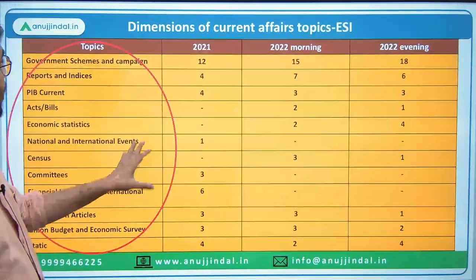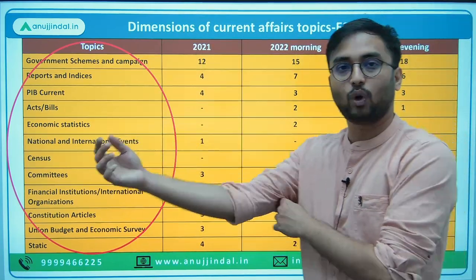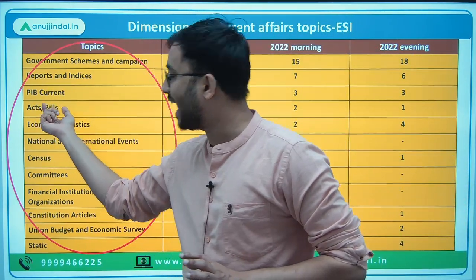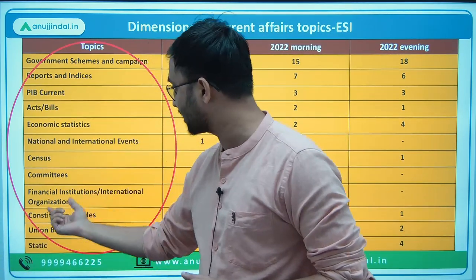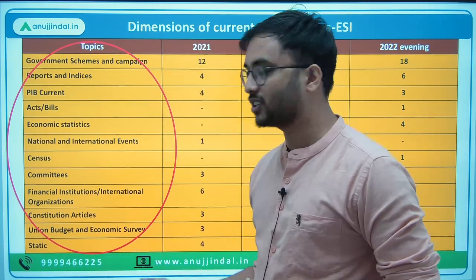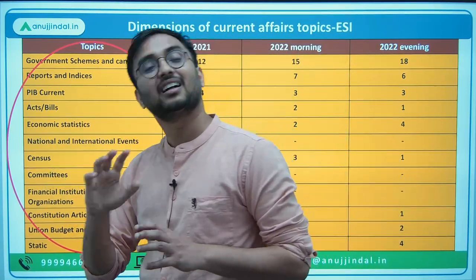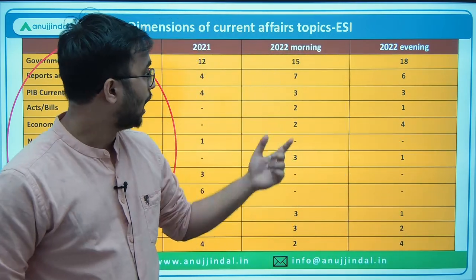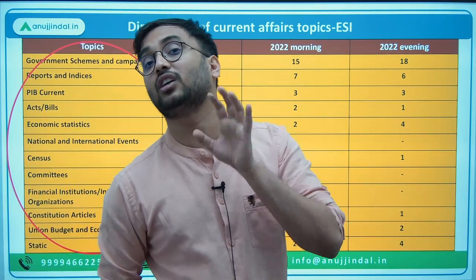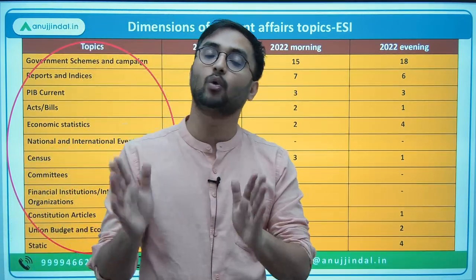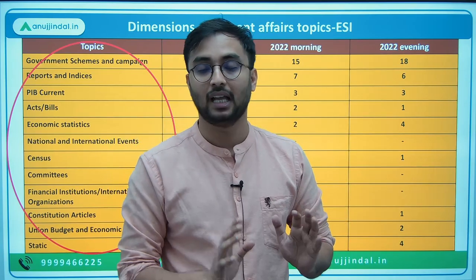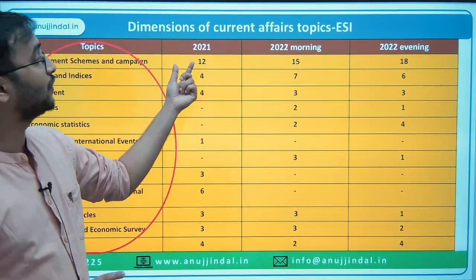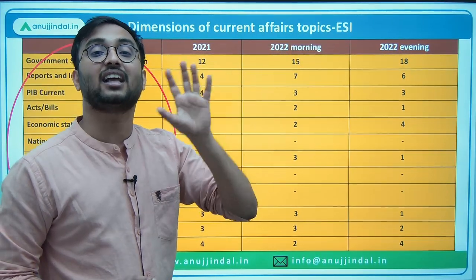Now the dimensions of current affairs topics asked in ESI: government schemes, reports and indices, PIB current news, acts and bills, important government reports such as census, committee reports, union budget, economic survey. In NABARD Grade A Phase 1 exam, ESI has 40 questions. Out of these 40 questions, 30 to 35 come from current affairs — from PIB news and government schemes. Remaining 5 to 10 questions are from ESI static. This shows how important current affairs is specifically for ESI.